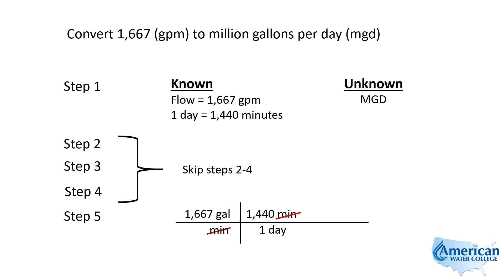Notice I have gallons on top, days on the bottom — so gallons per day. I need million gallons per day, MGD. So I'm going to have to do one more step, and that's where I divide by a million. Because 1 million is equivalent to that capital M that we see in MGD.